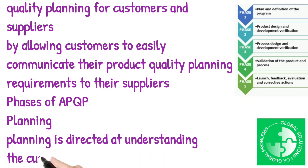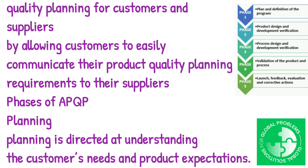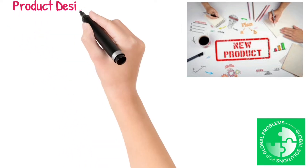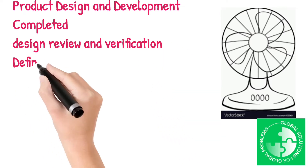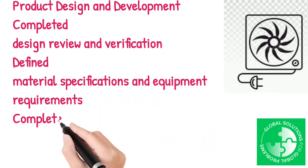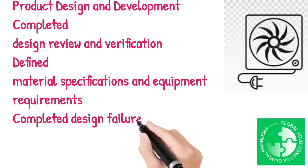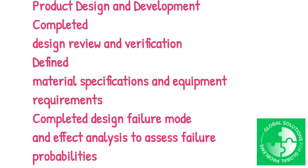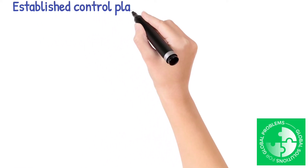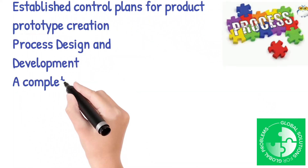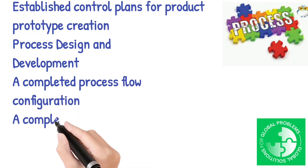Phase 1 - Planning: Planning is directed at understanding the customer's needs and product expectations. Phase 2 - Product Design and Development: Completed Design Review and Verification, Defined Material Specifications and Equipment Requirements, Completed Design Failure Mode and Effect Analysis to assess failure probabilities, and Established Control Plans for Product Prototype Creation.